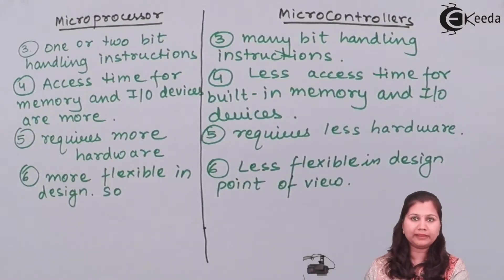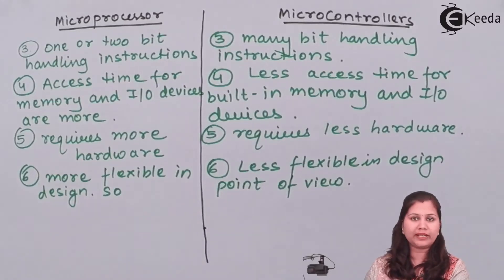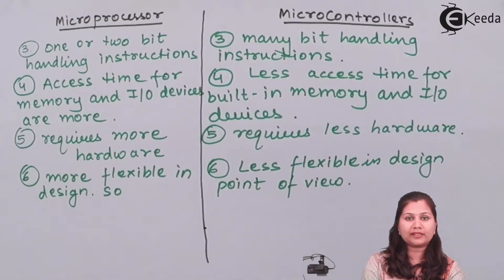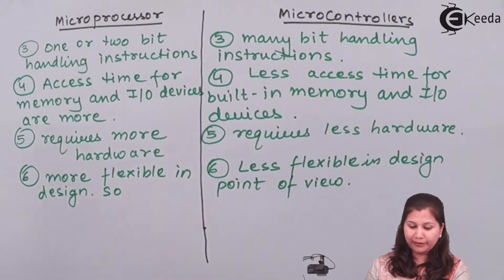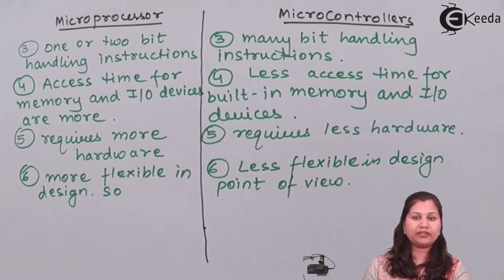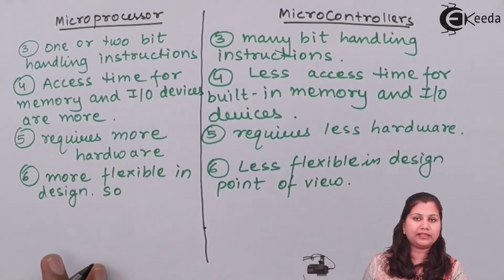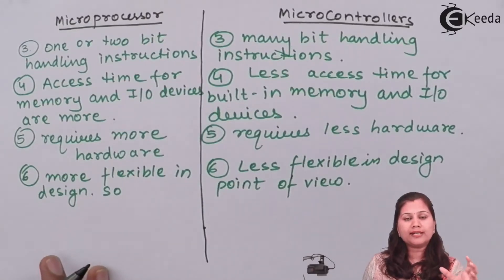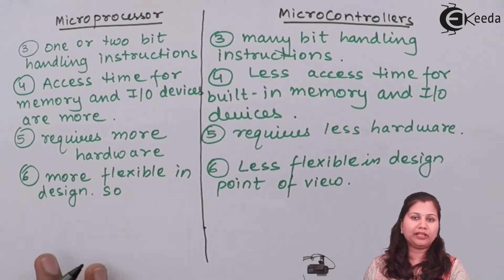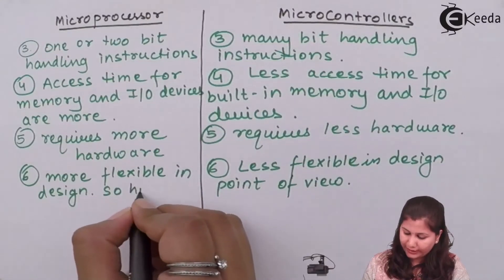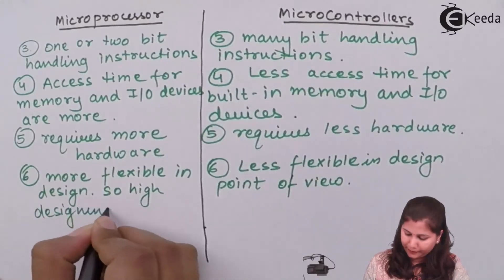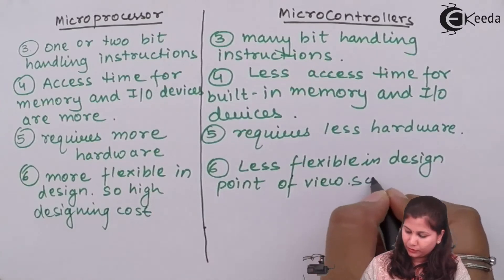Microprocessors are more flexible in design, meaning a single microprocessor can be used for various applications, whereas microcontrollers are less flexible from a design point of view. Because a single microprocessor can be configured for different applications, the designing cost is very high. Whereas microcontrollers, being less flexible in design, are manufactured for a single specific application only, so their designing cost is low.